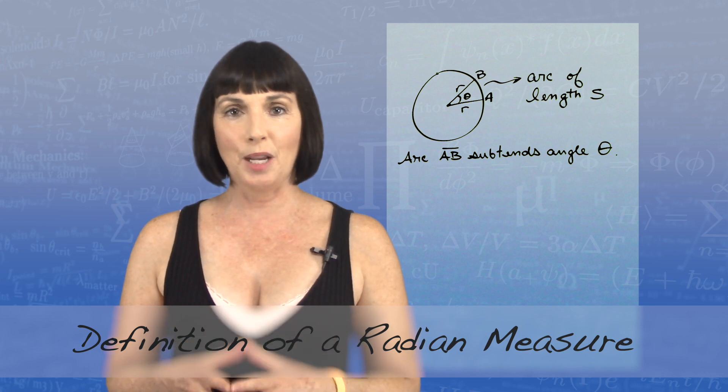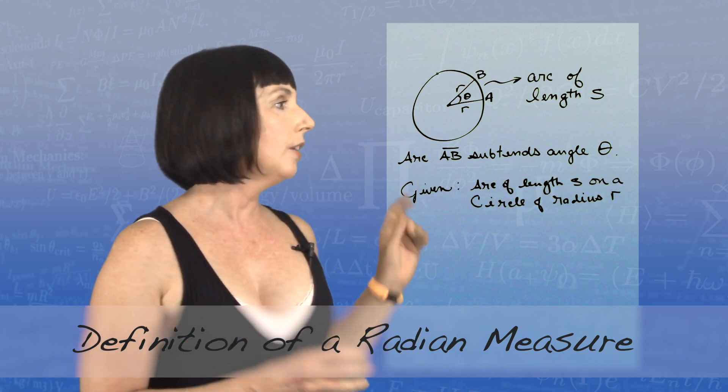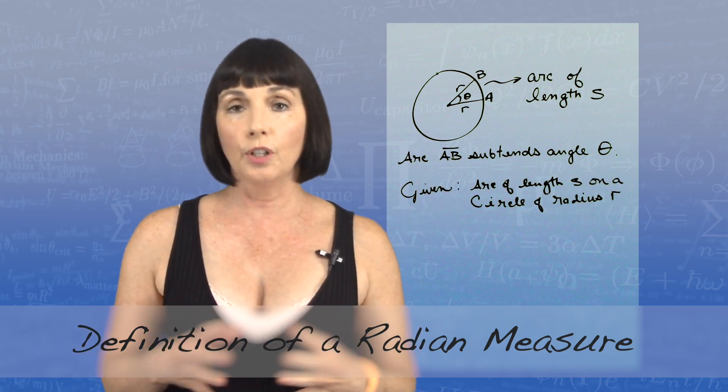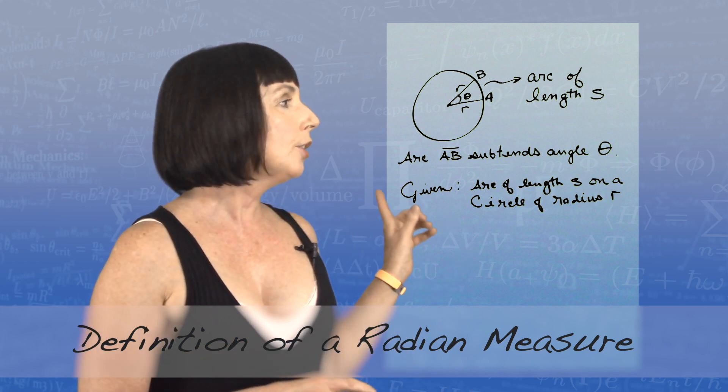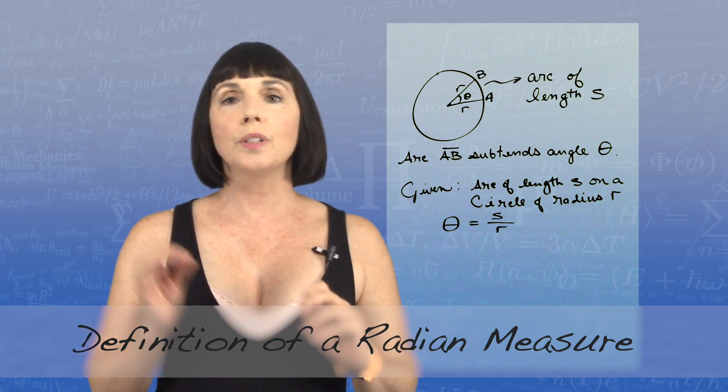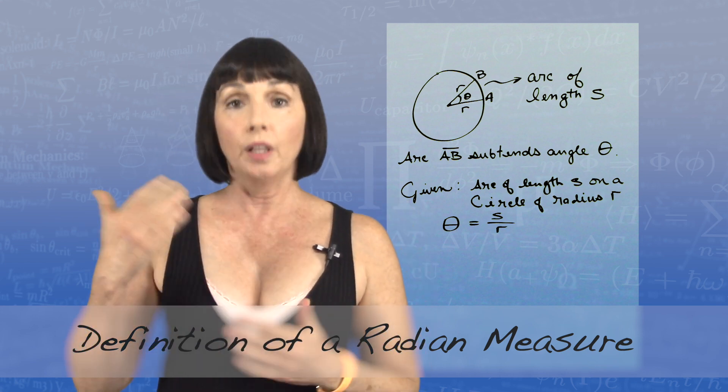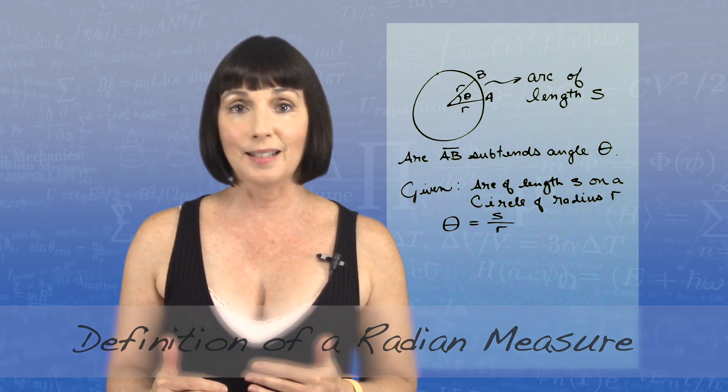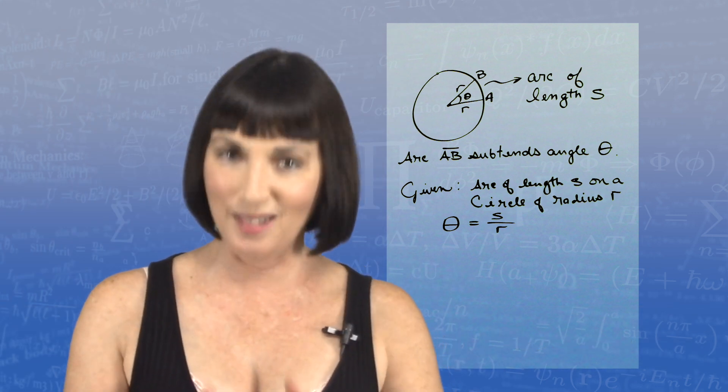Here's the definition of a radian measure. Given an arc of length s on a circle of radius r, the measure of the central angle subtended by the arc is theta equals s over r. So, the length of the arc divided by the radius.